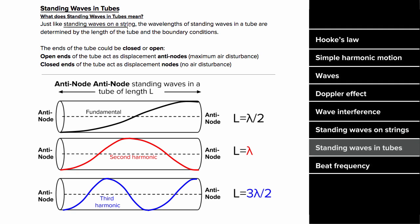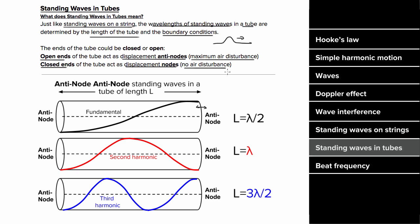How do you deal with standing waves in tubes? Just like standing waves in strings, the wavelength is determined by the length of the tube and its boundary conditions — but this time you're creating a standing wave out of sound waves. For boundary conditions: an open end acts like a displacement antinode, since the air at an open end can oscillate wildly and you get maximum air disturbance. A closed end acts like a displacement node, since there is no air disturbance at a closed end.